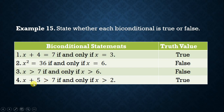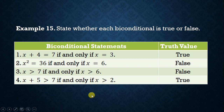Number four: x + 5 > 7 if and only if x > 2. Both equations have the same truth value for any value of x — both are true when x > 2 and false when x < 2. Thus this is a true statement.